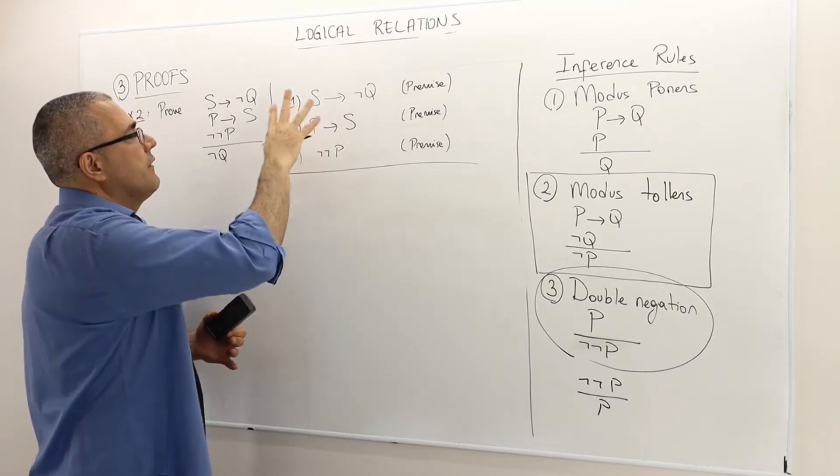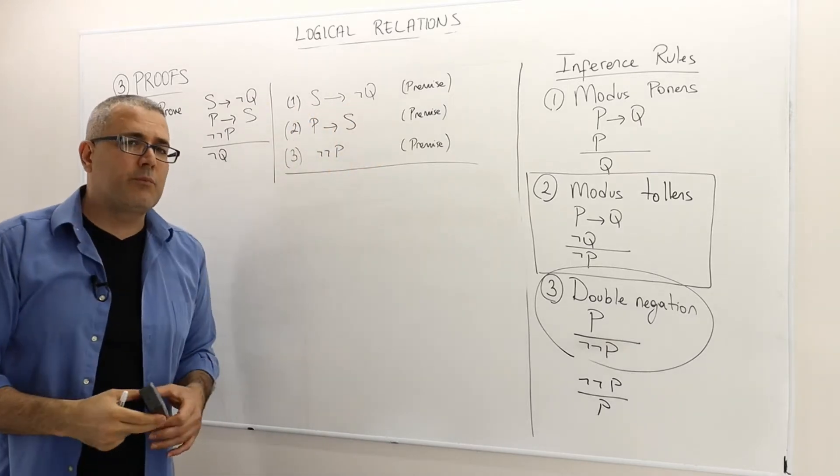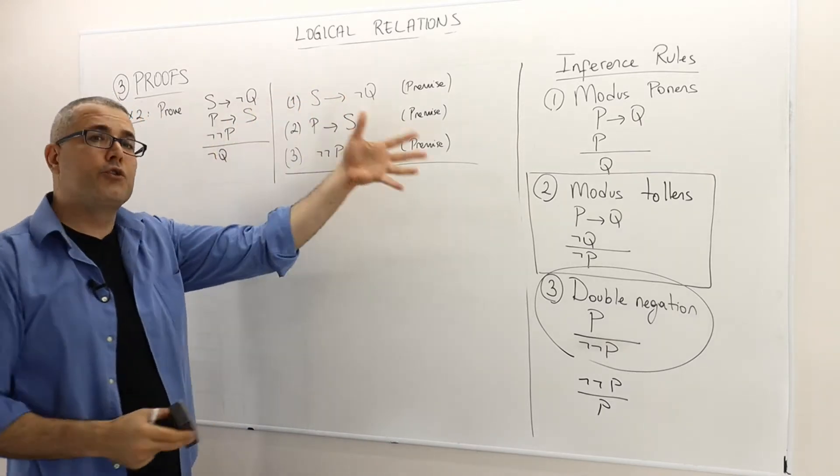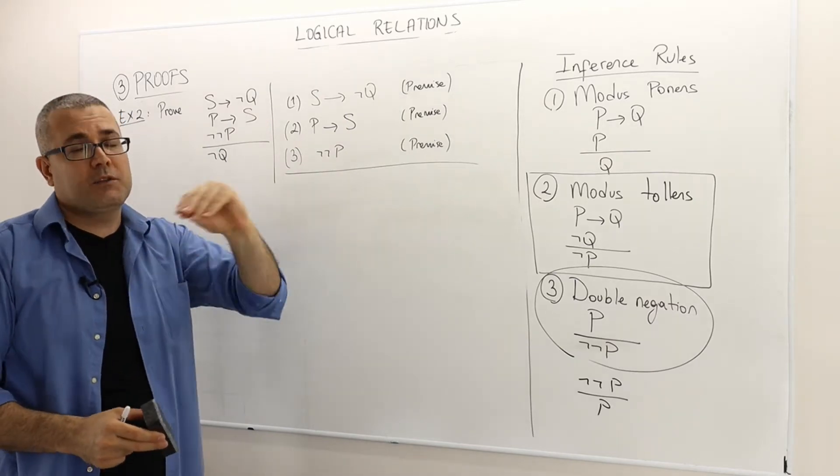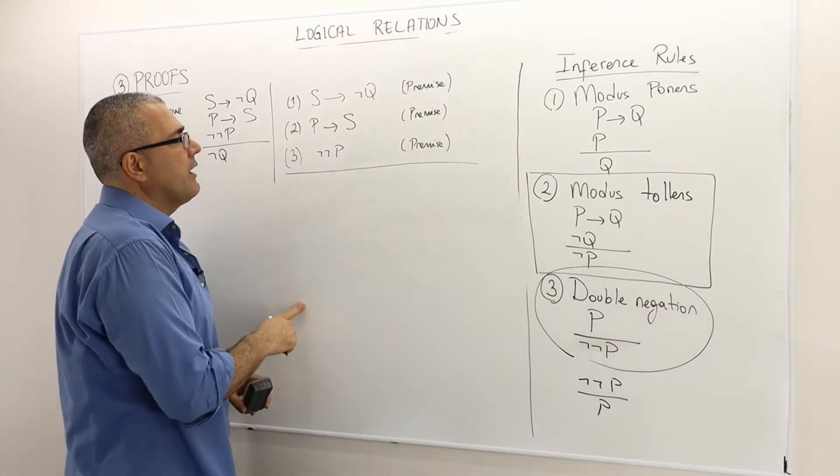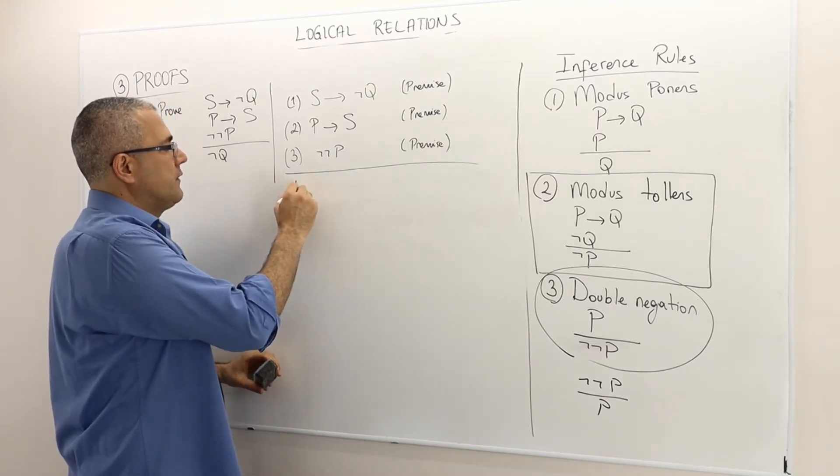So, as standard, I first write down the three premises and I assume that they're true, and I want to show that the conclusion, which is not Q, must be true. Alright, so how can I derive this conclusion?